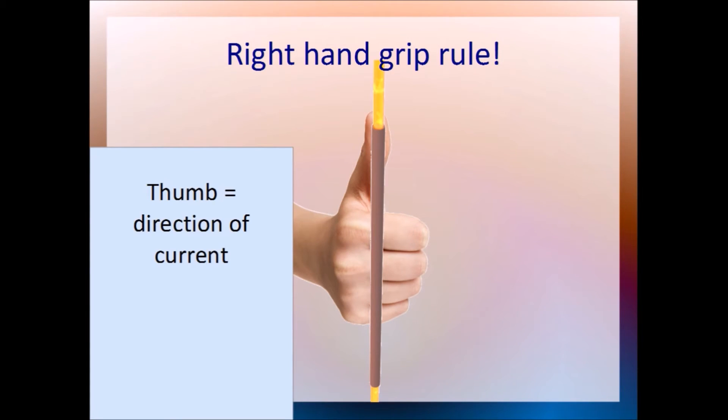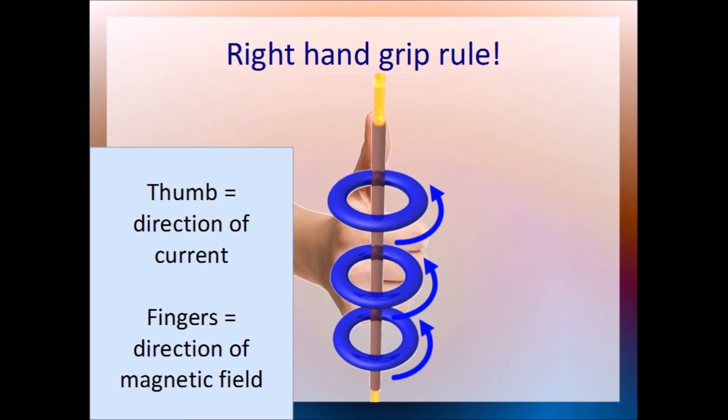First, point your thumb in the direction the current is flowing in. In this case, it's straight up. And that's all you have to do. Your fingers curl around the same way as the magnetic field lines. That's how you know their direction. Again, remember to use your right hand for this.